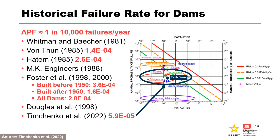Dams have failed at a rate of about 1 in 10,000 per dam year of operation depending on the potential failure mode and age of the structure. The failure rate in the University of New South Wales database after 1950 is about half the rate before 1950. Such statistics consider all dams worldwide, regardless of design and construction attention. For a specific dam, think about factors that make a potential failure mode more or less likely than this historical rate. This chart shows how the failure rate for dams compares to open pit mine slopes, bridge scour, nuclear power plants, and common human factors such as car accidents, airplane crashes, cancer, and heart disease. This chart was originally developed by Whitman and most recently updated by Timchenko.